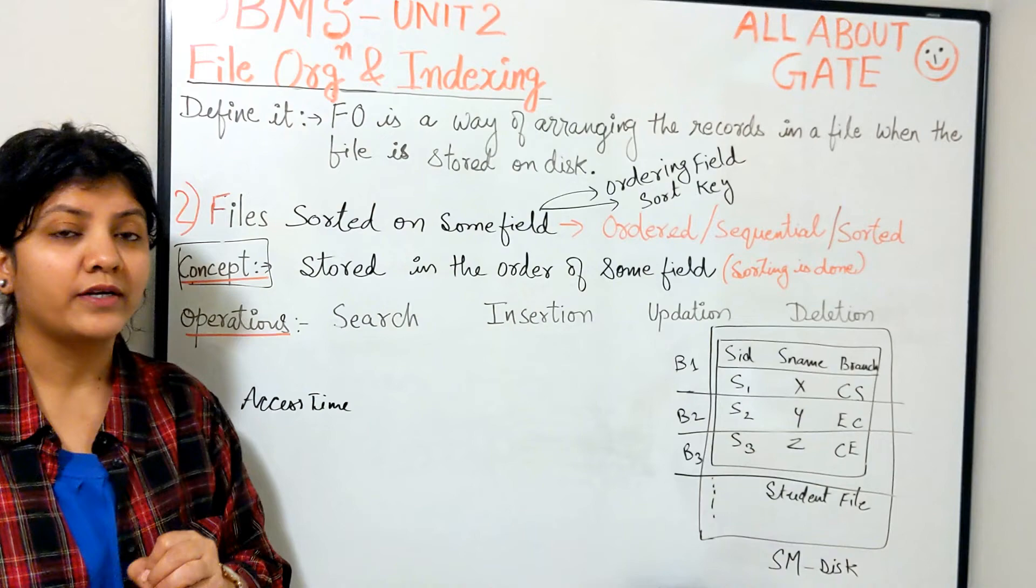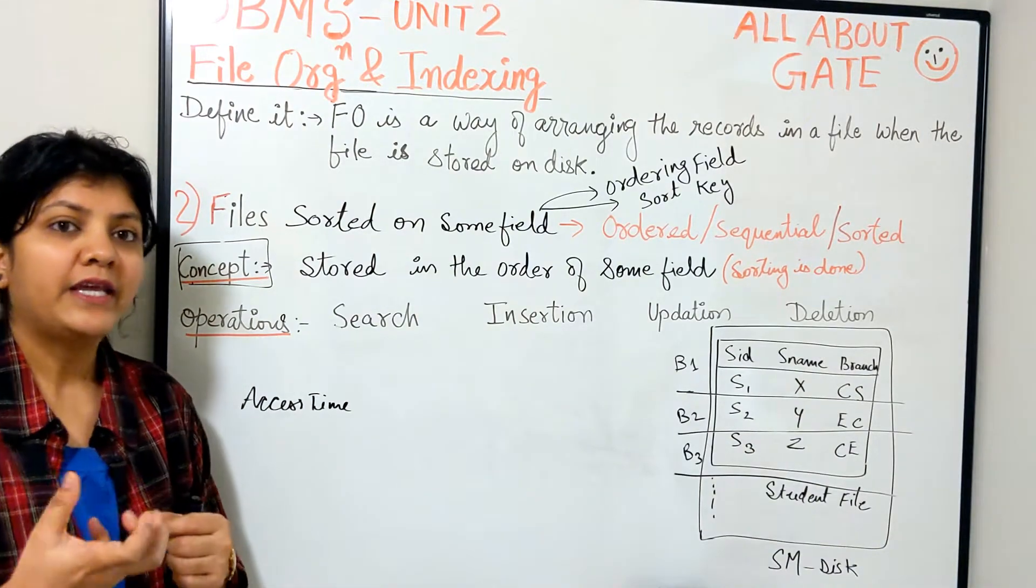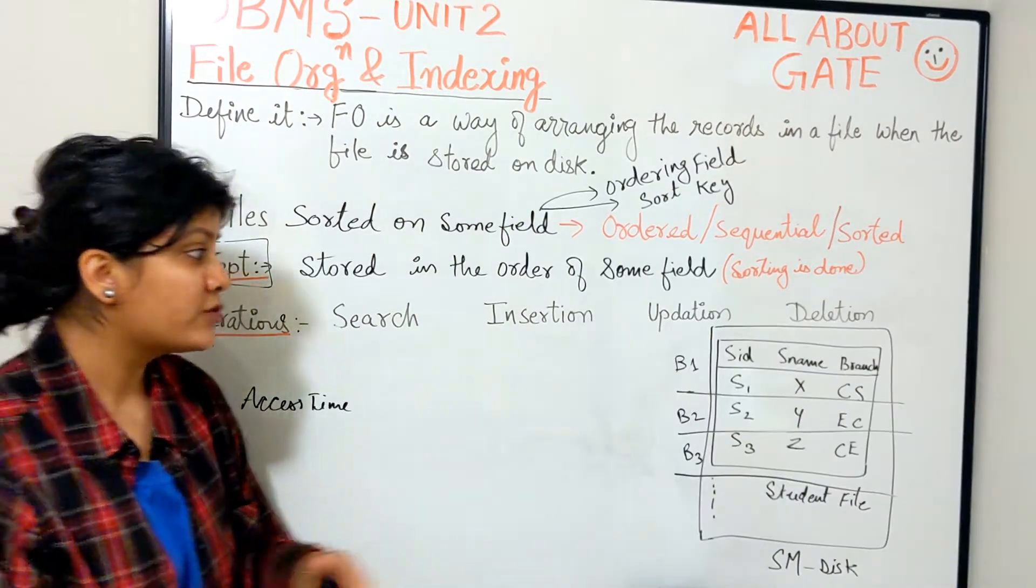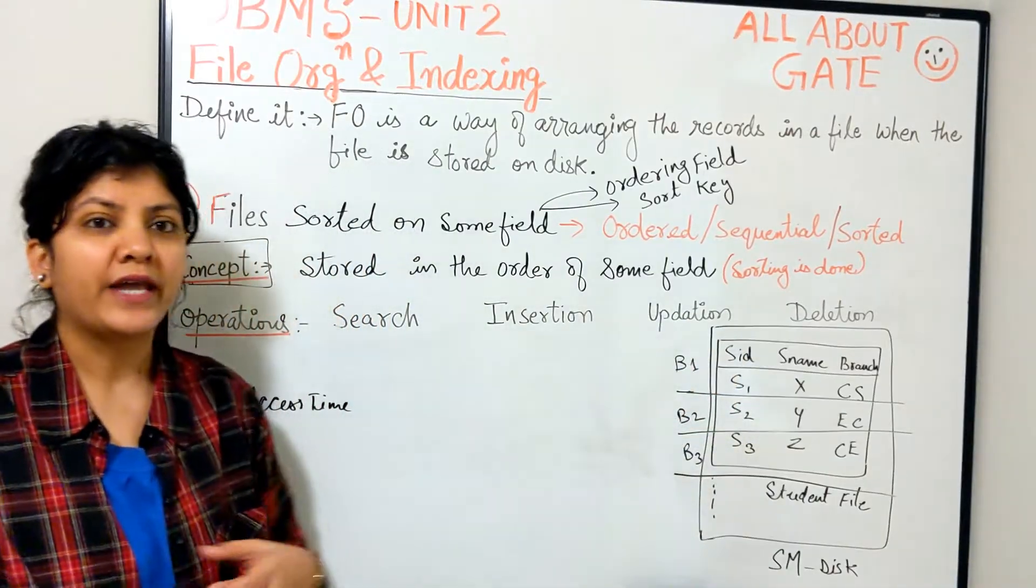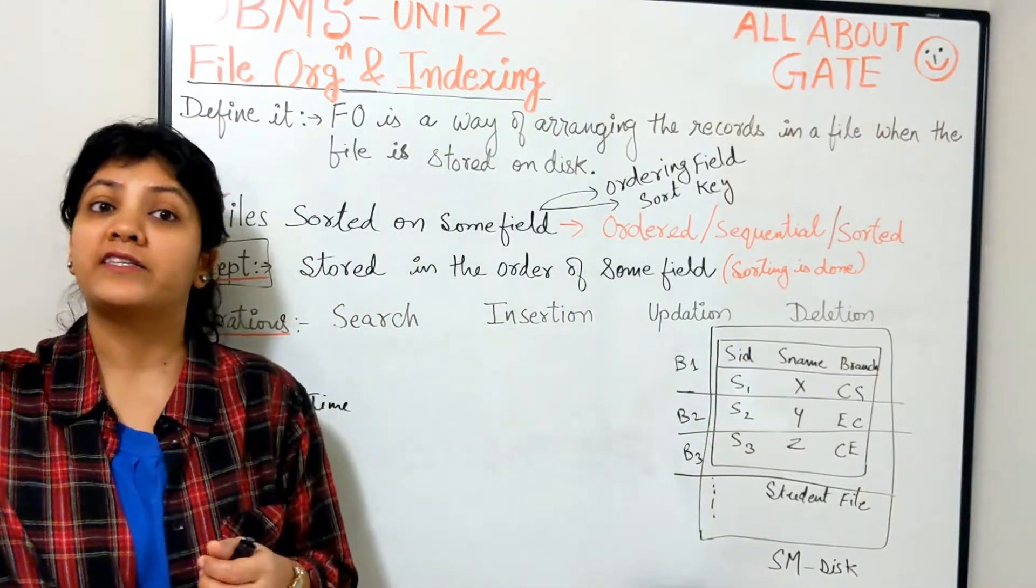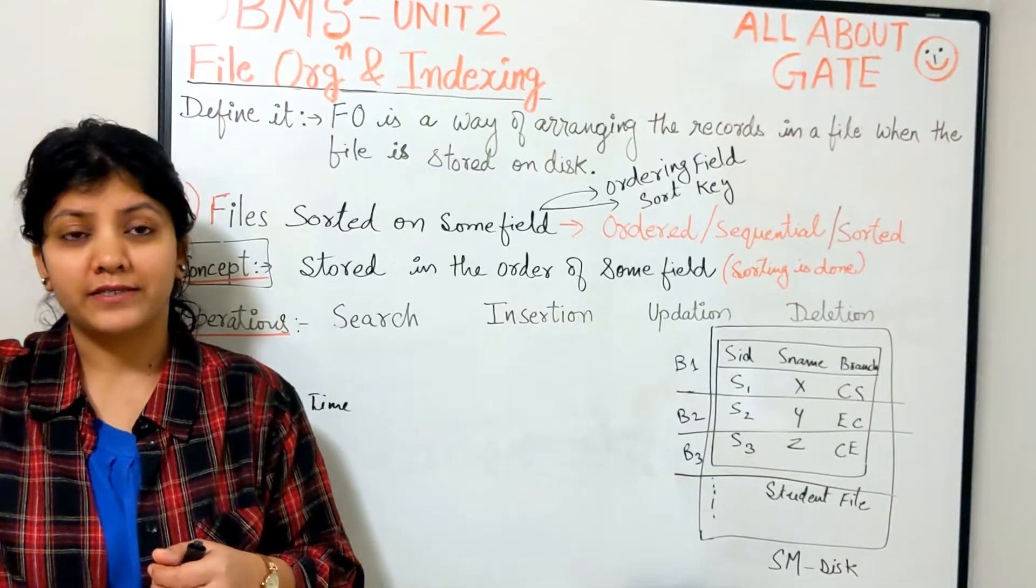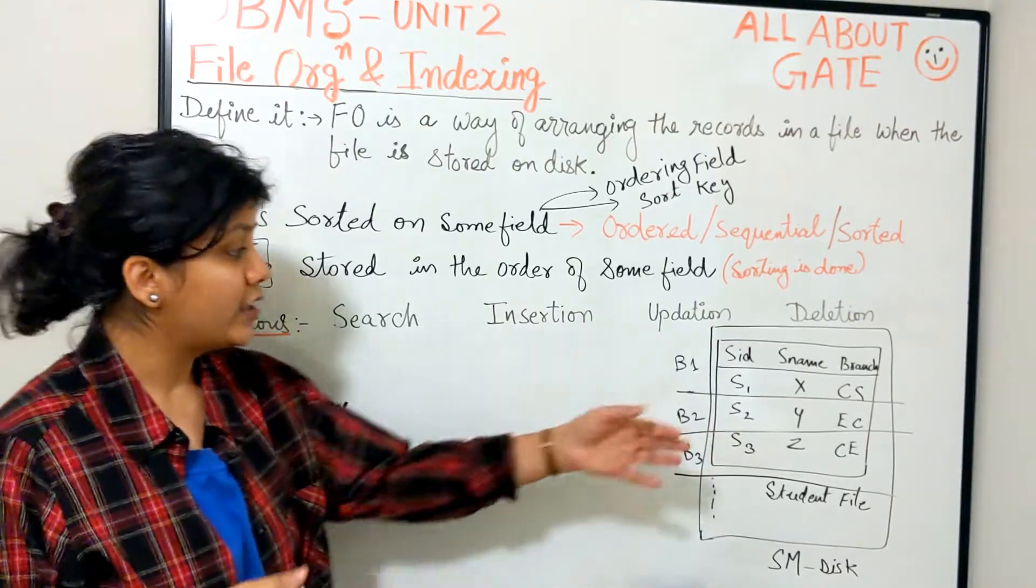Now you see how you're going to make a search. Because we know that the file is already ordered, if your application is actually putting queries based on the student ID, I want to access the record where the student ID is equal to S1, S2, whatever student ID.